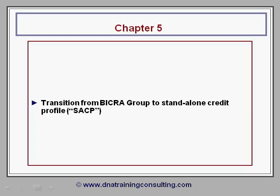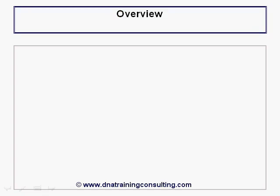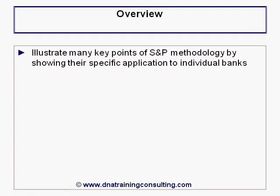Chapter 5 examines the next steps in S&P's bank rating methodology, which take us from the determination of the BICRA group to the so-called Standalone Credit Profile, or SACP. To make the discussion livelier in this chapter and the next, we will illustrate many of the key points of the S&P methodology by showing their specific application to individual banks.